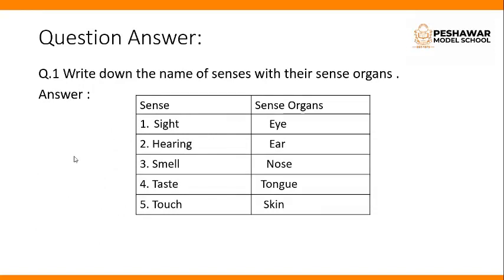Question number 1: Write down the names of senses with their sense organs. There are 5 senses in a human body. These are: sight, with sense organ eye; hearing, sense organ ear; smell, nose; taste, tongue; and touch, skin.